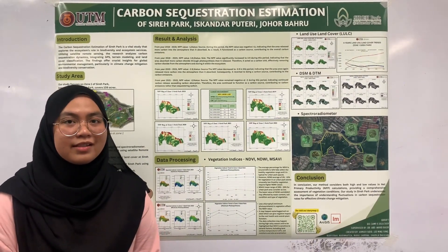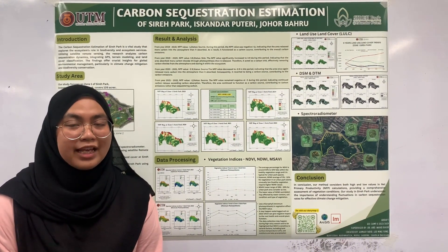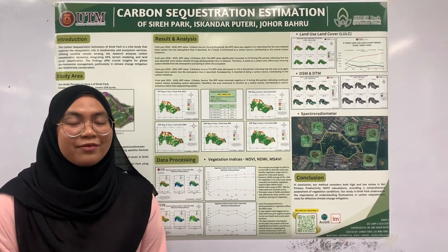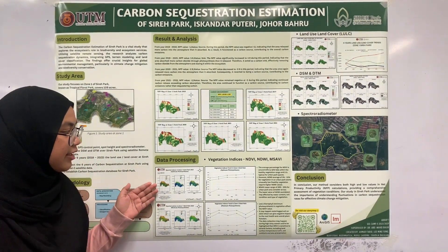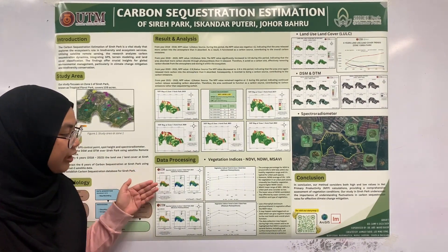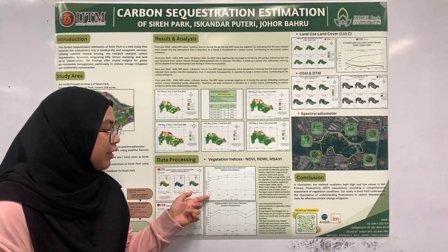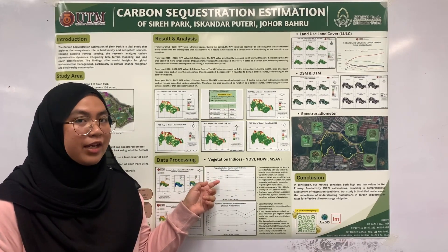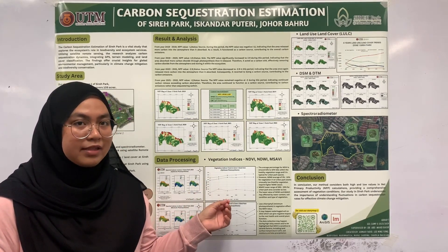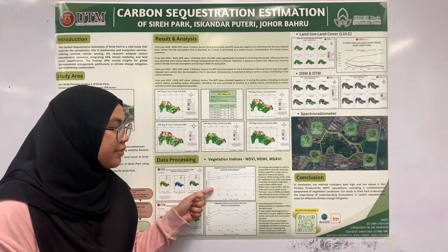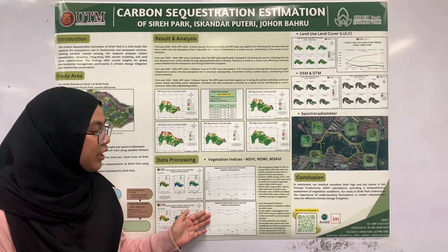The next data processing involves vegetation indices including NDVI, NDWI, and MESA-V. NDVI was developed to estimate vegetation health and density. NDWI is focused on water content in vegetation. MESA-V is for monitoring vegetation in diverse environments. This is our output for the spectral indices in Zone 1, Sirih Park 2023, including optimal photosynthesis and minimum photosynthesis. The average percentage for NDVI ranges from 33% to 42%, which is the healthy vegetation range and density feature for urban park space. However, the values for NDWI and MESA-V were quite low for healthy vegetation in urban space.